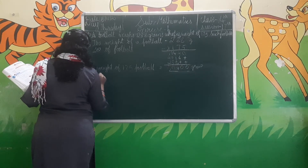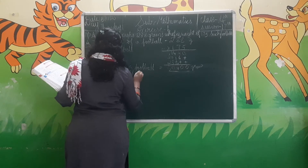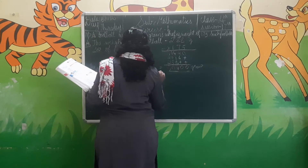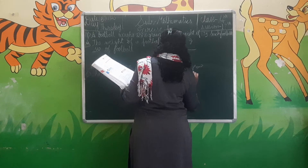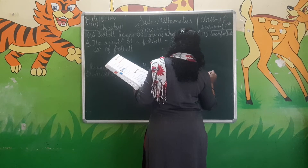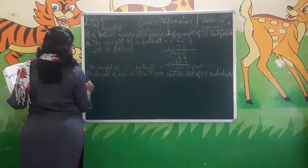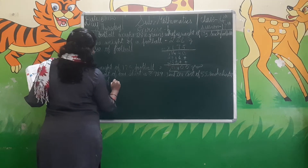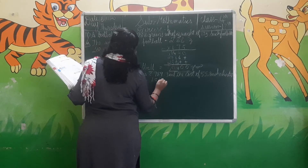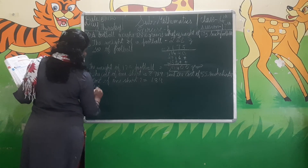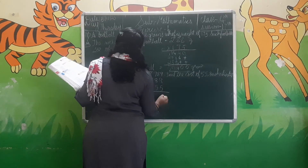The cost of one shirt is Rs. 789. Find the cost of 55 such shirts. Cost of one shirt is Rs. 789. Number of shirts is 55. So you have to multiply 789 into 55.